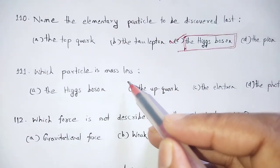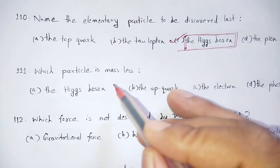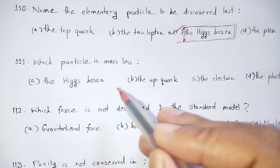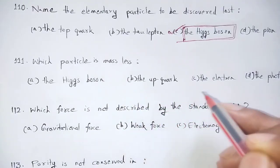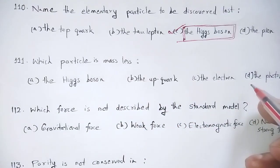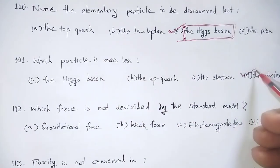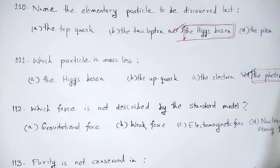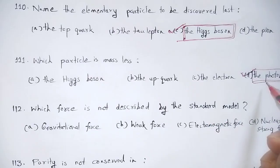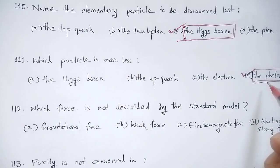Which particle is massless? Options: the Higgs boson, the up-quark, the electron, the photon. The photon is massless — option number D is the correct answer.